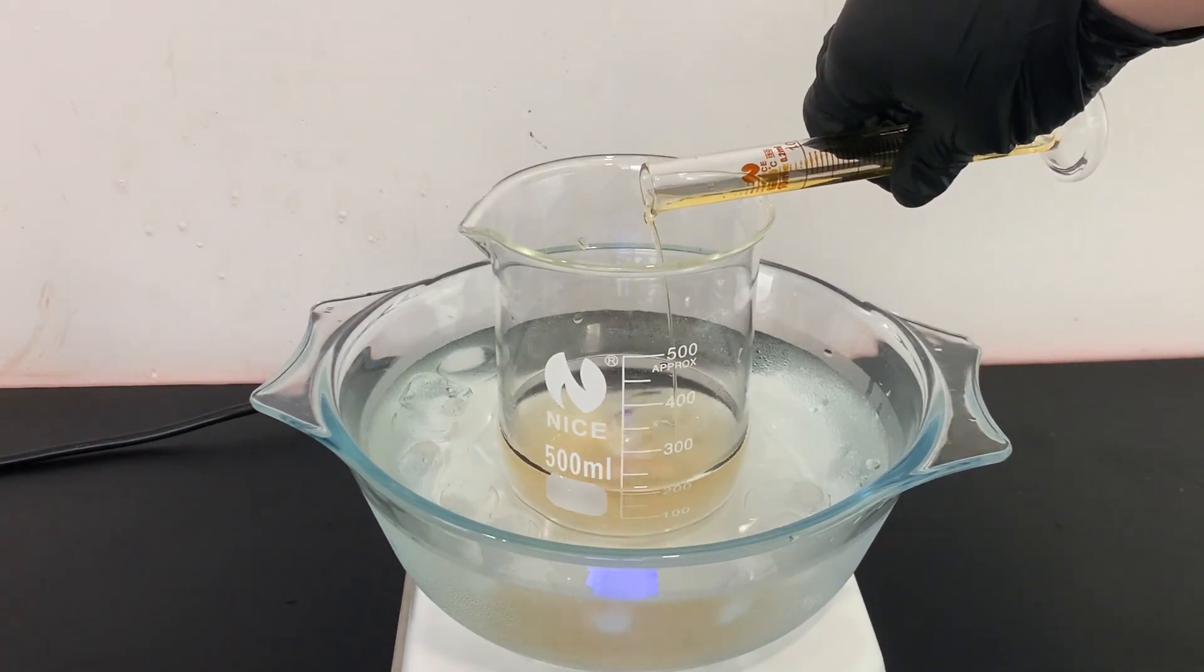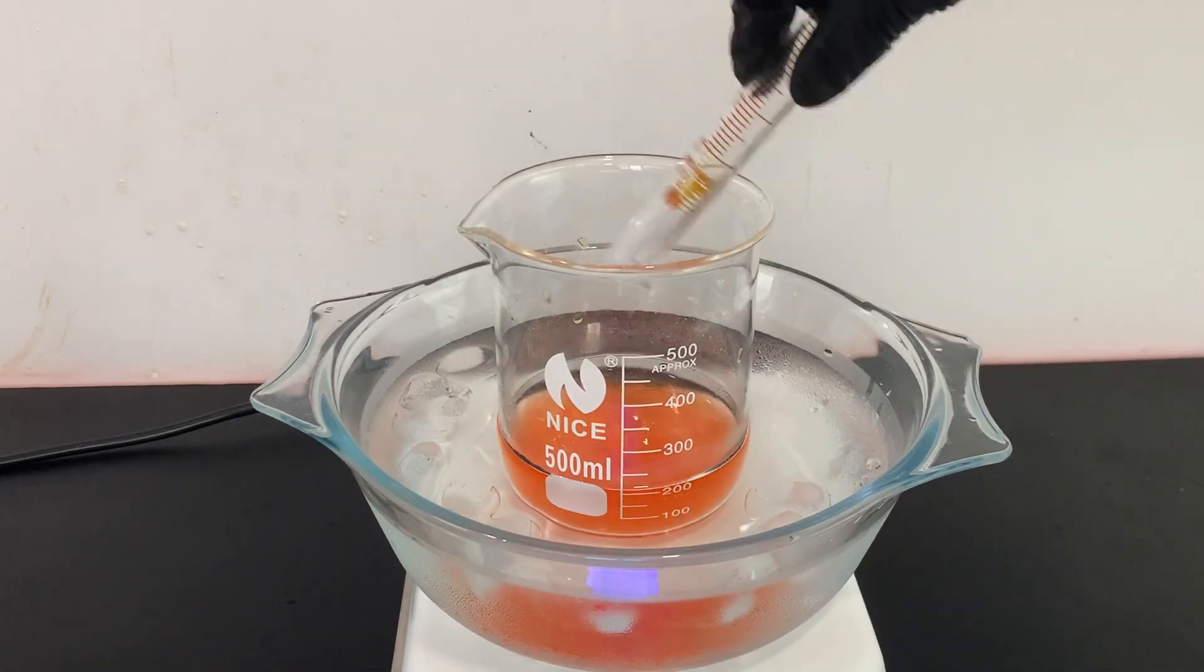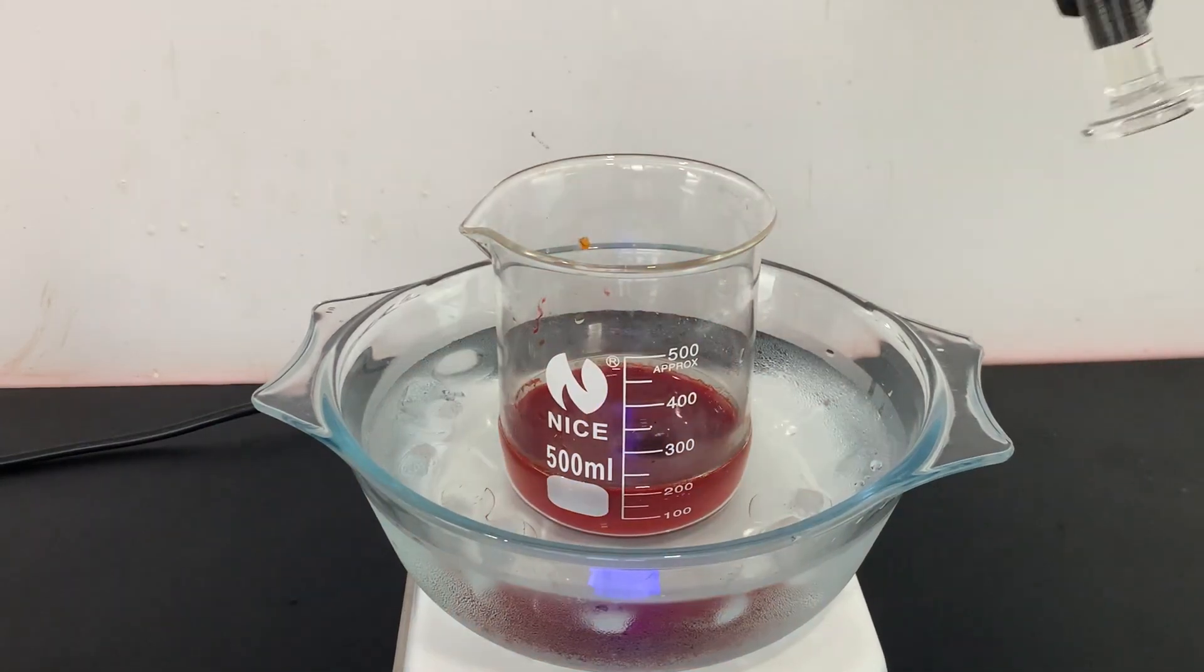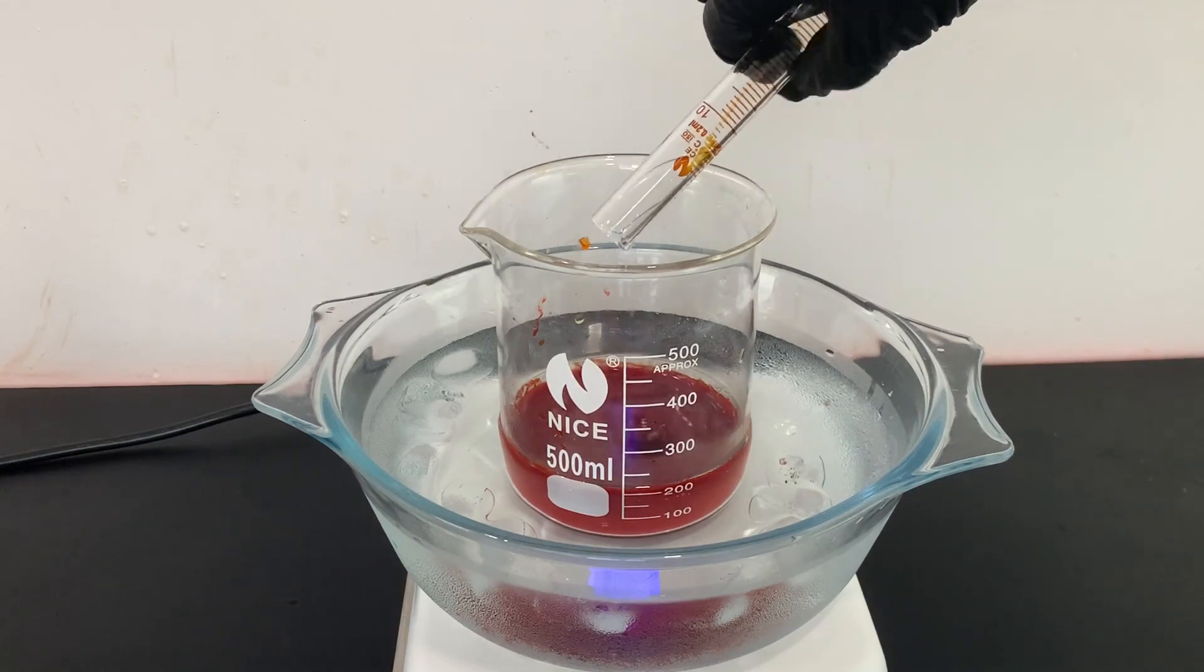I then added 2.8 milliliters of NN-dimethylaniline to the reaction mixture. A color change is immediately observed. I washed the measuring cylinder with 5 milliliters of glacial acetic acid.